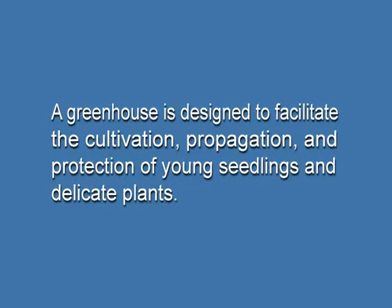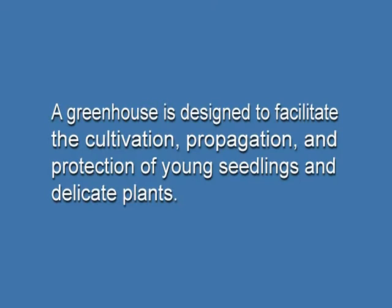Why do we build a greenhouse? A greenhouse is built to facilitate the cultivation, propagation, and protection of young seedlings and delicate plants. The roof and walls are made of glass. The greenhouse is perfectly designed to maintain and regulate temperature, humidity, soil moisture, and light, and it also controls insect pests and weeds.